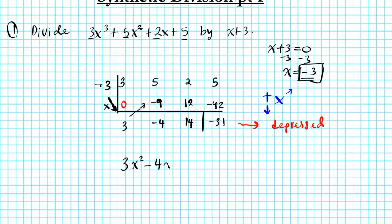minus 4x plus 14. And guess what? This is your remainder. So your remainder is negative 31. So there you have it.